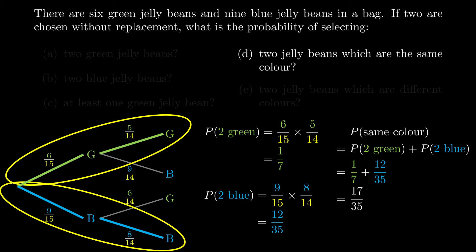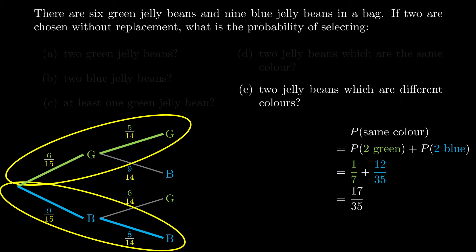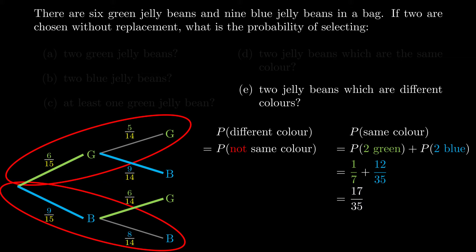Finally, two jelly beans of different colors. Different colors means if the first is green I want the second to be blue, and if the first is blue I want the second to be green. We can use the same complementary approach: different color just means they are not the same color. So we do 1 minus the chance they are the same color — 1 - 17/35 — and we get 18/35.